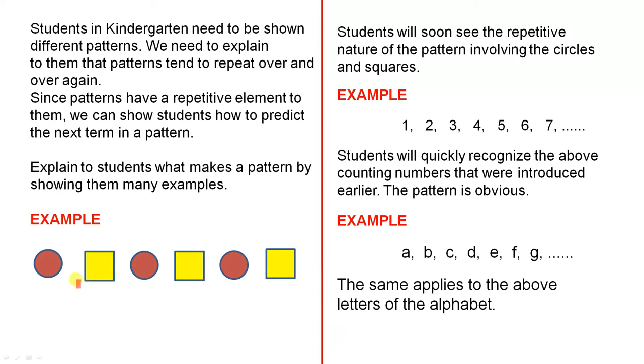Now here's a very good example. You have a circle, square, circle, square, circle, square. Students will soon see the repetitive nature of the pattern involving the circles and squares, and they'll be able to tell you that the next shape is a circle.